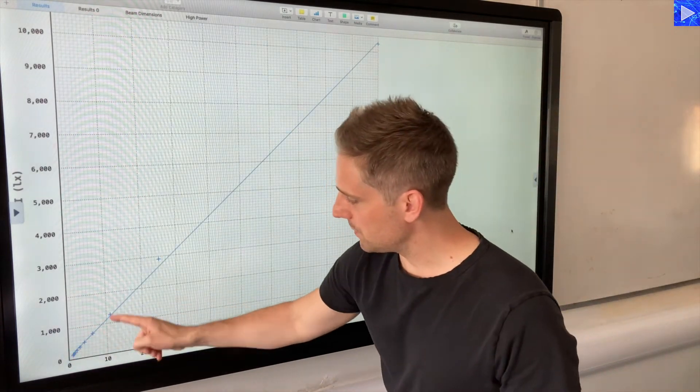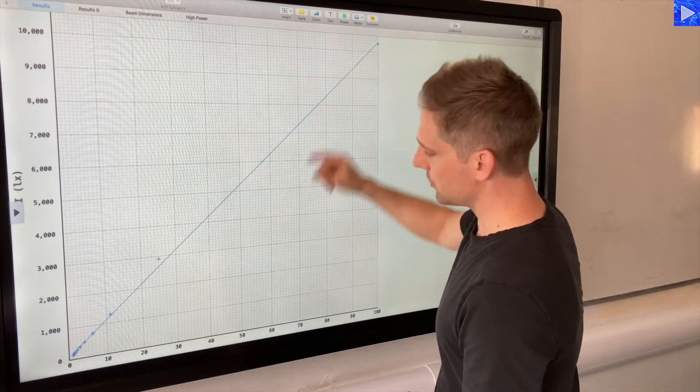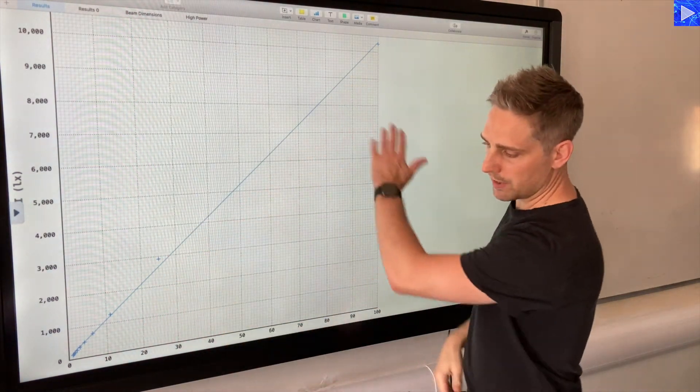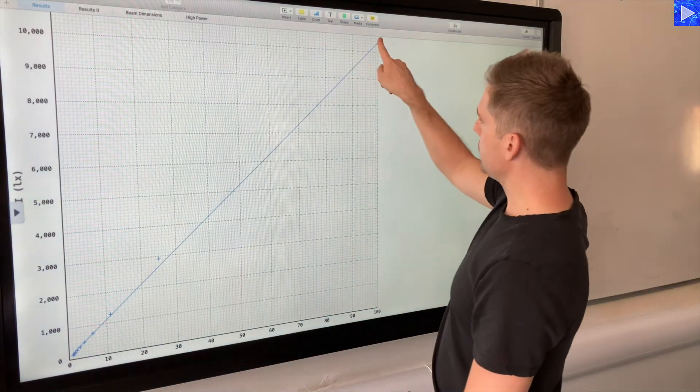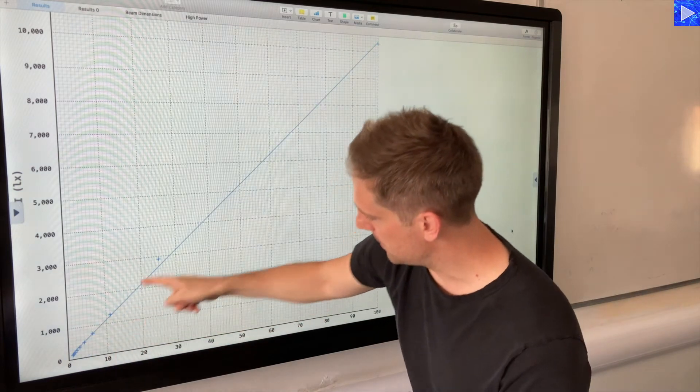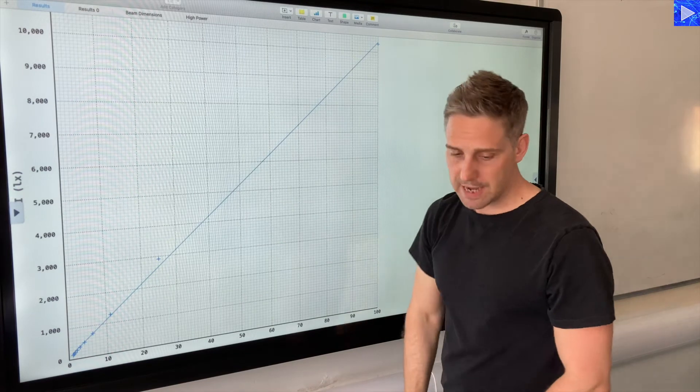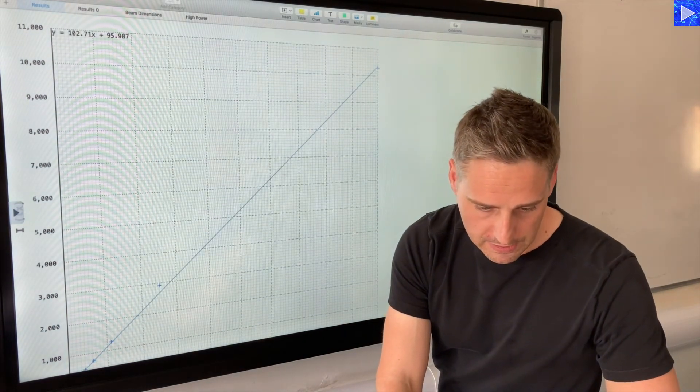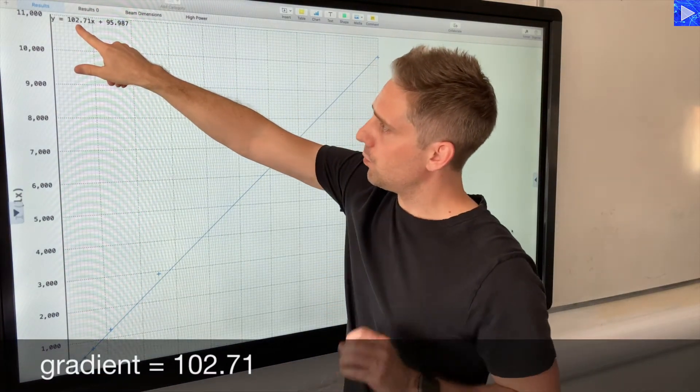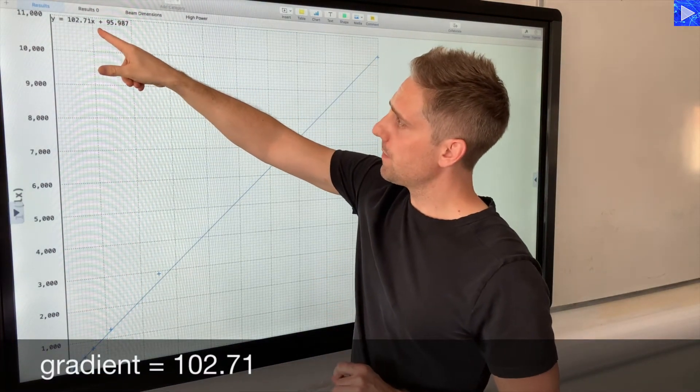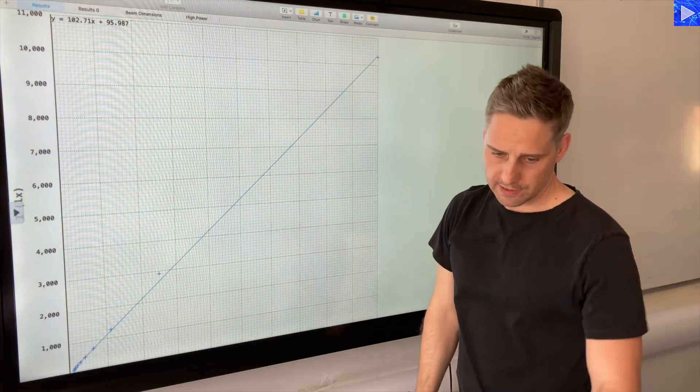Lots of data points down here and then quite spread out here. I can see that there's a bit of curvature, divergence from the straight line. So I don't know how good that data is. Obviously if we ignored that point it would be closer to the straight line, but anyway, let's just take that. The gradient is 102.71 and the y-intercept is 95.987.